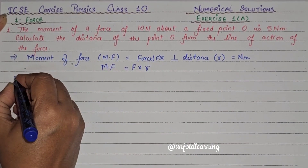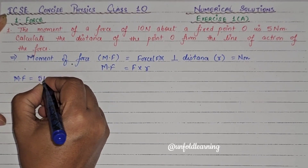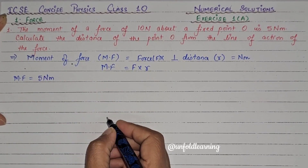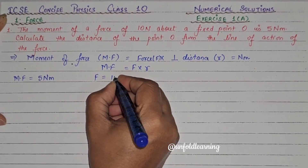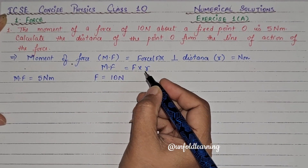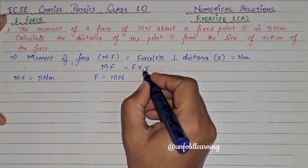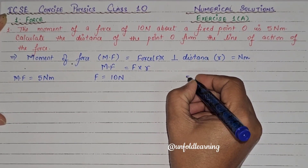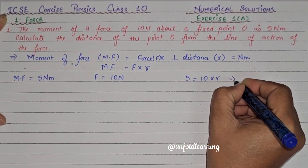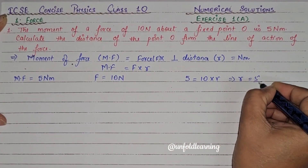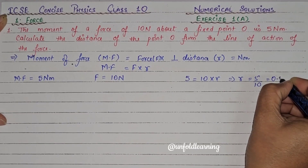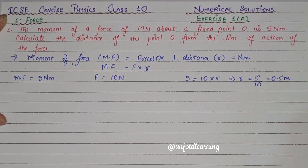We have the moment of force as 5 Nm, and force F is given as 10 N. We need to find the perpendicular distance R. So R = 5 ÷ 10 = 0.5 meters. Therefore, the distance of point O from the line of action of force is 0.5 meters.